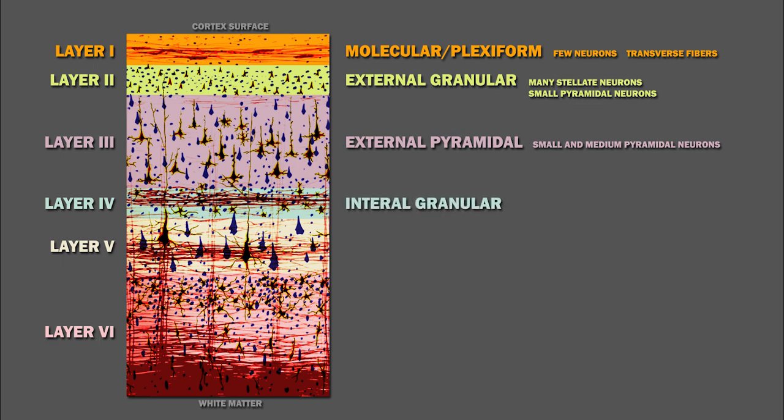Layer 4 is called the internal granular layer. It is occupied by stellate and pyramidal cells.